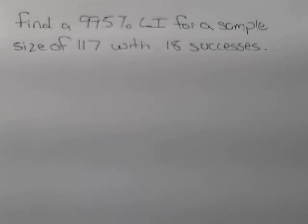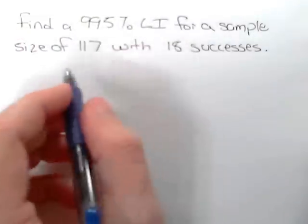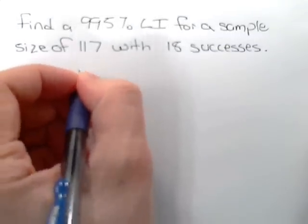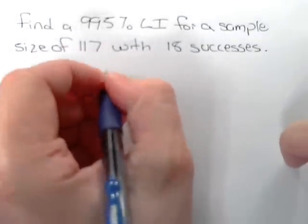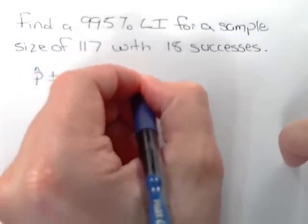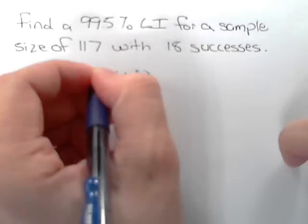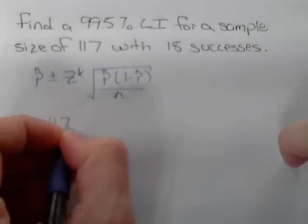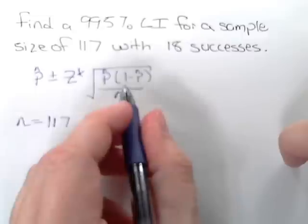Find a 99.5% confidence interval for a sample size of 117 with 18 successes. The formula for a confidence interval for a single sample is p-hat plus or minus z-star times the square root of p-hat times 1 minus p-hat over the sample size.